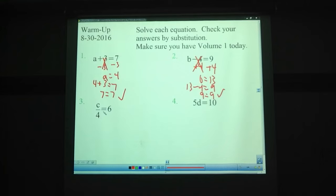Problem number three: C divided by 4 equals 6. So we divided by 4, we need to multiply by 4 to get rid of that. So C equals 24. Check our solution, plug in 24 for C. 24 divided by 4 equals 6. Hey, that is a 6. 6 equals 6. Fantastic.